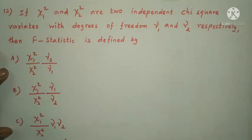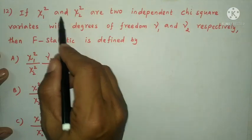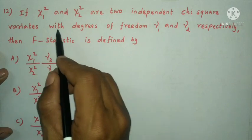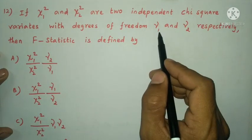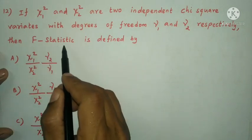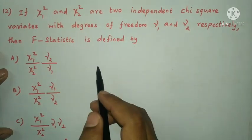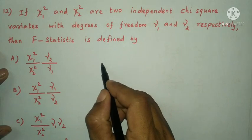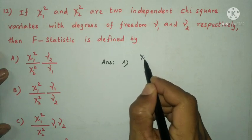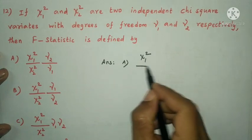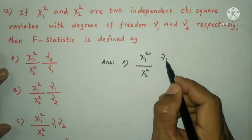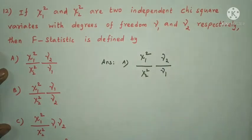Next question: if χ₁² and χ₂² are two independent chi-square variates with degrees of freedom γ₁ and γ₂ respectively, then the F-statistic is defined by option A: (χ₁²/γ₁) / (χ₂²/γ₂), equivalently χ₁²/χ₂² · (γ₂/γ₁).